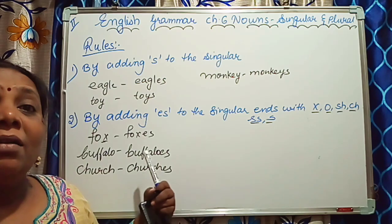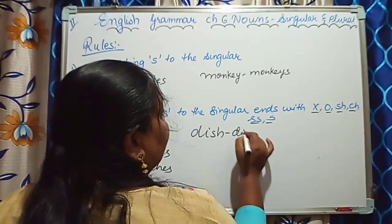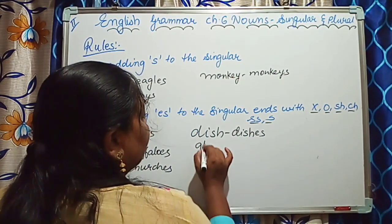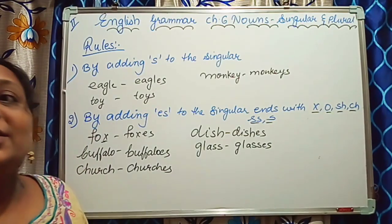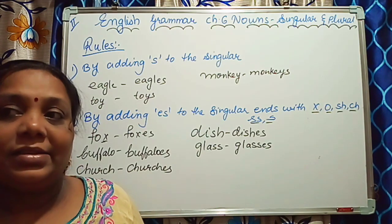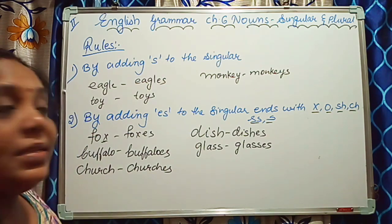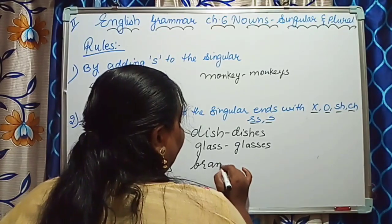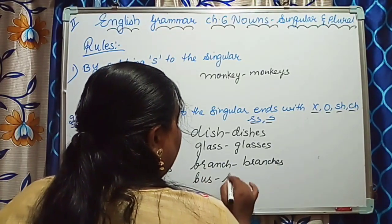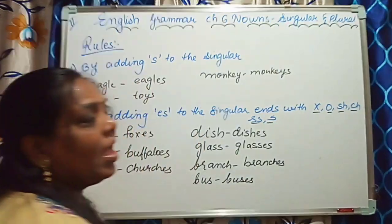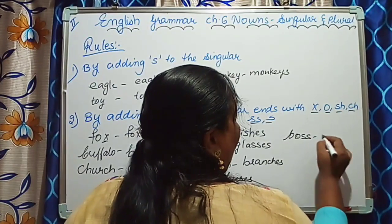Church becomes churches. Dish becomes dishes. Glass becomes glasses. Branch becomes branches. Bus becomes buses. Boss ends with double S, so bosses.